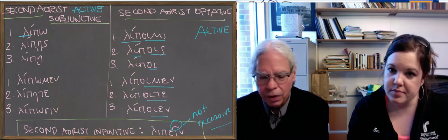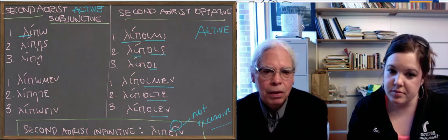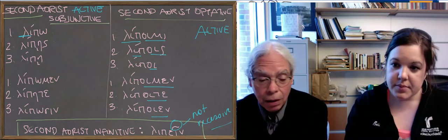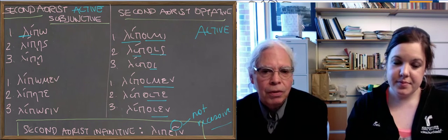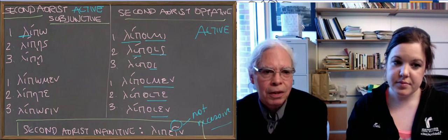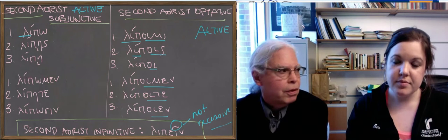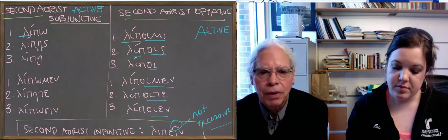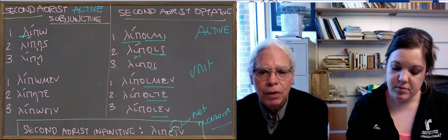So check out the forms of the second aorist middle, the second aorist middle in the subjunctive and the optative and the indicative. I don't think you're going to be surprised. I think you'll maybe identify them when you see them, but look at them in the book.